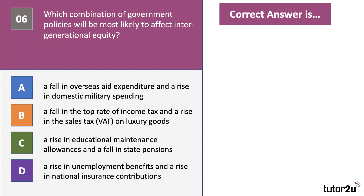Two more questions. Which combination of government policies will be most likely to affect intergenerational equity? Intergenerational equity refers to equity and fairness across generations within a population. Have a go at question six.